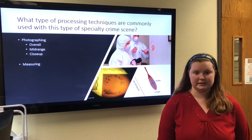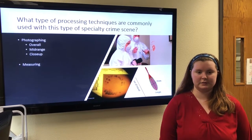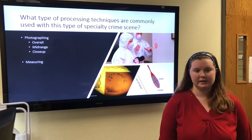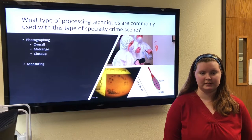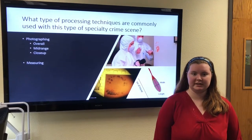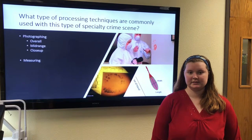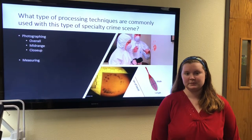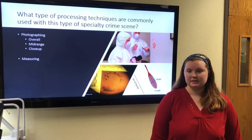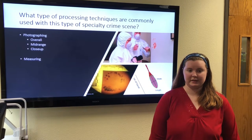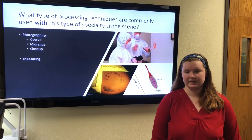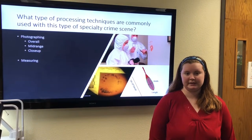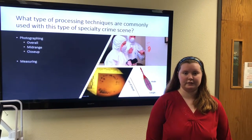When measuring blood stain patterns, you need photos with and without a ruler. You also need a protractor to determine the angle of impact, which helps with the stringing process to locate the origin. It's important to take evidence quality photographs because most surfaces with blood stains cannot be removed for lab analysis. Once you leave the crime scene, the blood will likely be cleaned up, so good quality pictures are essential.